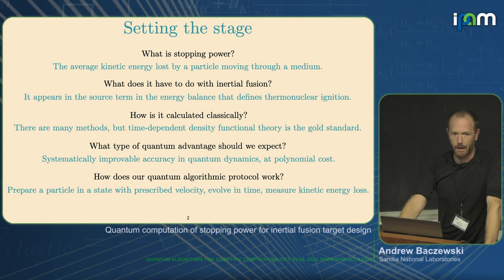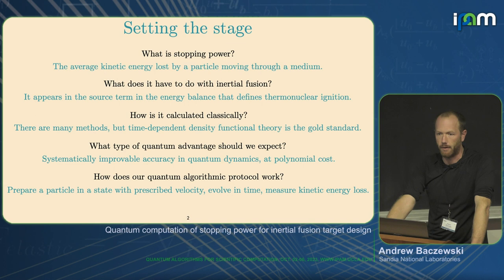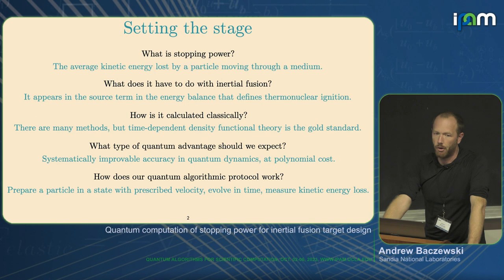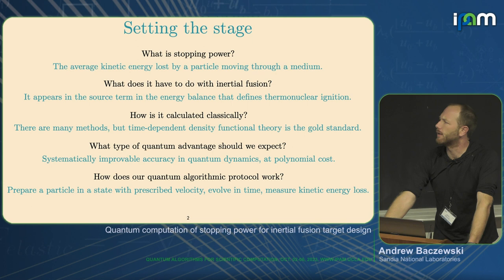What does stopping power have to do with inertial fusion? It appears in the source term in the energy balance that defines thermonuclear ignition. The defining criterion for whether thermonuclear ignition has occurred is essentially whether alpha particle production is redepositing energy into a burning plasma at a rate that balances against conductive and radiative losses. That's how we define ignition, making this a pretty important quantity when designing ICF targets.